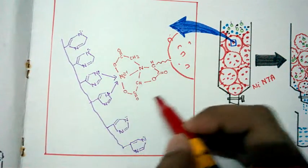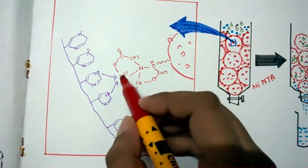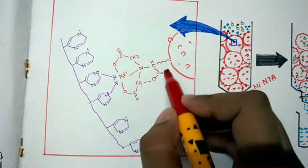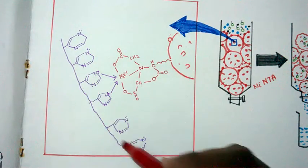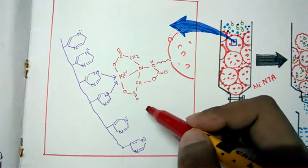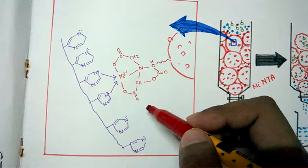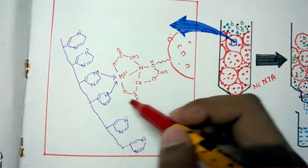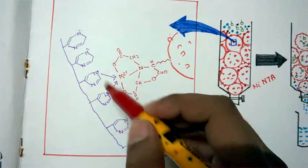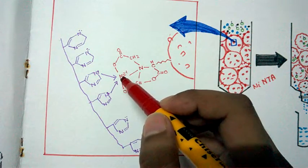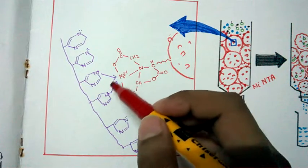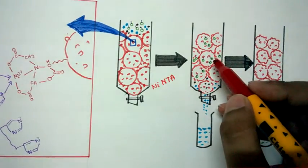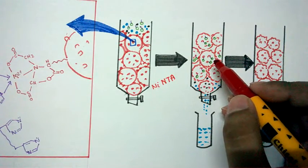So in this affinity bead, if we say it's a NINTA matrix, this NINTA matrix looks somewhat like this. It has a nickel, it has a lot of other organic moieties with it. But what is notable is that we have a hexahistidine tag in the N-terminal or the C-terminal of our desired protein. So these hexahistidine tag, two of the histidines would actually coordinate, coordinate with this nickel and form a coordinate bond. Thus it can get attached with the matrix. Here you can see the representation, it is getting attached with the matrix.